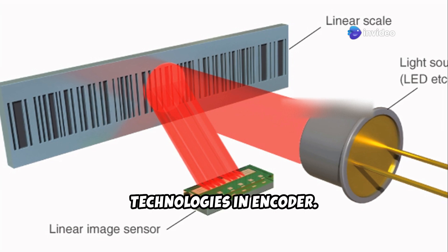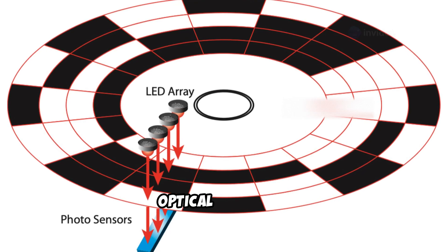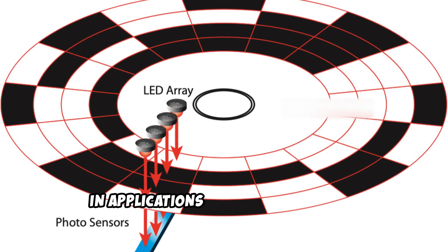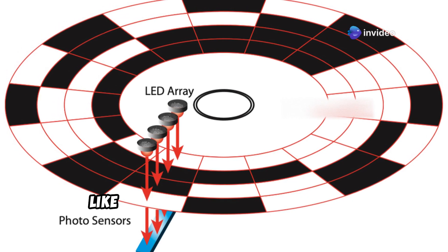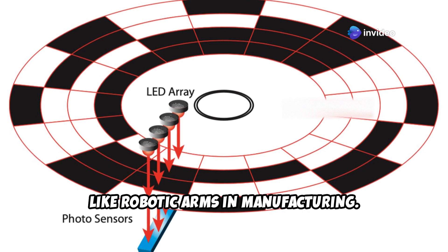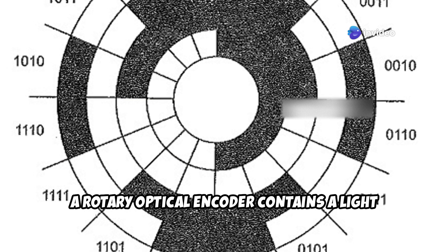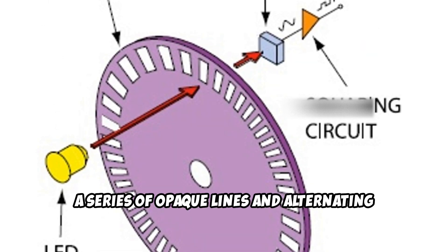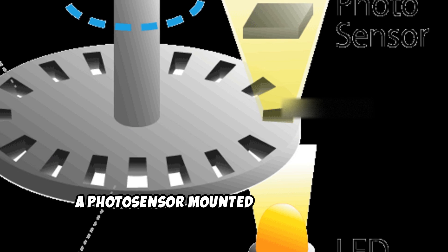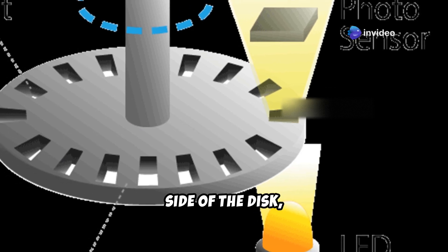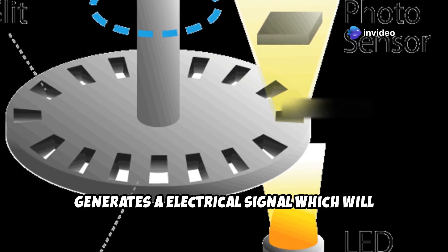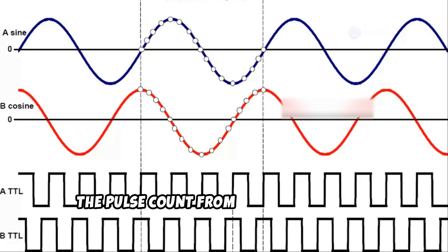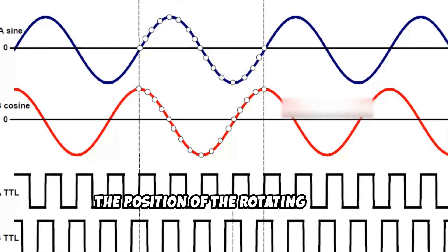Now, let's look into the sensing technologies in encoders. The first one, optical encoders, rely on light to detect motion. These are highly accurate and often used in applications requiring precision, like robotic arms in manufacturing. A rotary optical encoder contains a light source and a rotating disc patterned with a series of opaque lines and alternating translucent slots. A photosensor mounted on the opposite side of the disc generates the electrical signal, which is converted to a square wave signal via an electrical circuit. The pulse count from the wave provides the position of the rotating shaft.